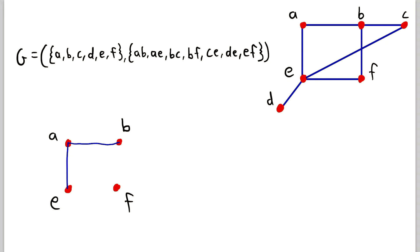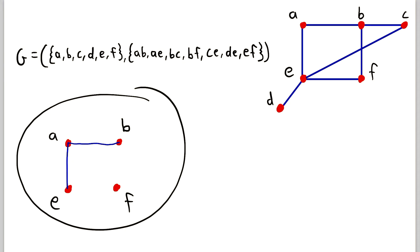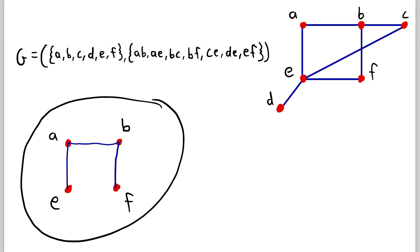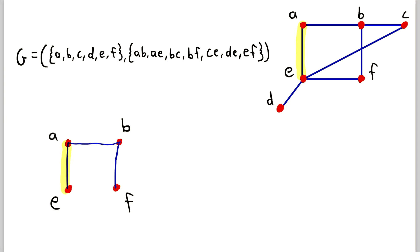An edge-induced subgraph can't have an isolated vertex, but that doesn't really get at the heart of what an edge-induced subgraph is. An edge-induced subgraph of G is basically the subgraph you get when you take some handful of edges from G and include all of the incident vertices. So in an edge-induced subgraph of G, we'd only be able to get vertex F if we included an edge that is incident with F.